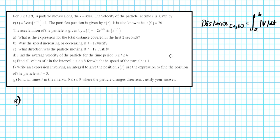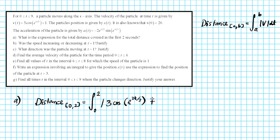So that's the formula. Let's go ahead and write down the expression for the total distance covered in the first two seconds. Our total distance, going from zero all the way to two, can be given by the integral from 0 to 2 of the absolute value of v(t) = 3cos(e^(2t/3)) + 1, dt. This is the expression for the total distance. You can also write it where v equals that expression, and then put in 0 and 2 for your limits of integration.